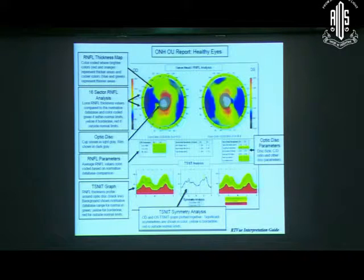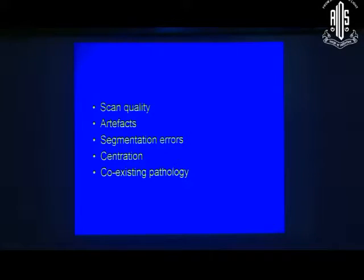If you look at the RTVue OCT, very similar, same color pattern, except that your abnormalities are marked in the ring out there. The average parameters look like this, and the thickness map looks like that. But before you start interpreting a scan like this, you need to look at some of the things.